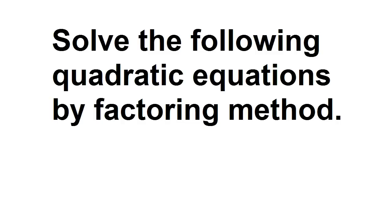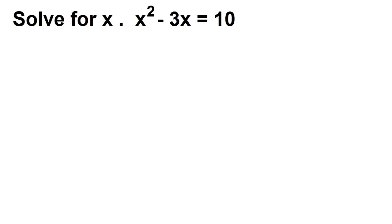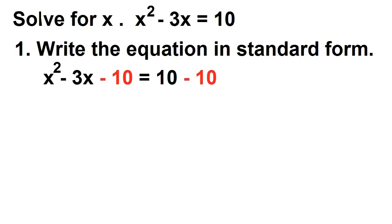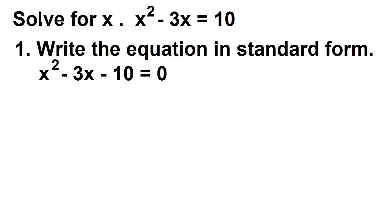Solve the following quadratic equations by the factoring method. Solve for x: x² − 3x = 10. To solve by factoring, first write the equation in standard form. Using the subtraction property of equality, subtract 10 from both sides: x² − 3x − 10 = 0.